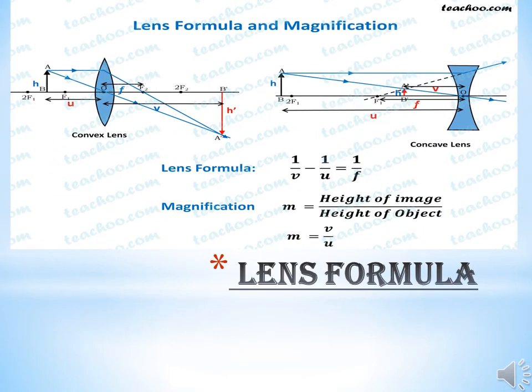In this slide, we are going to learn the lens formula and magnification, also known as linear magnification. According to the lens formula, 1/V minus 1/U is equal to 1/F, where V stands for the distance between the image and the optical center, U stands for the distance between the object and the optical center, and F stands for the focal length. In numericals, the known values are substituted with their proper sign, and then the unknown quantity is obtained with its proper sign.